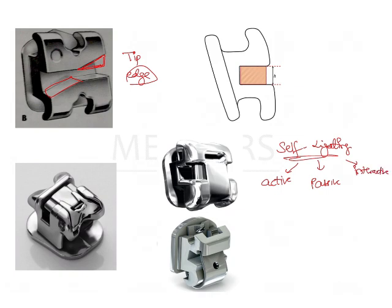Active self-ligating brackets have a spring or clip mechanism which engages or comes into the slot. The slot extends to a certain point, and this clip actually comes into the slot of the bracket. When the wire is held in place, this spring engages or impinges on the wire. This kind of bracket is known as active because it engages the wire into the slot — it impinges or pushes it.